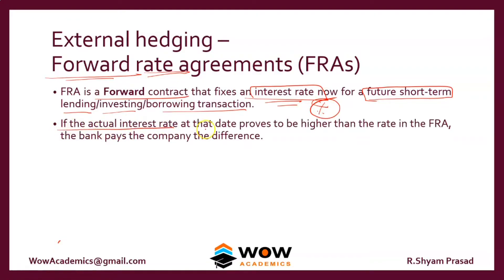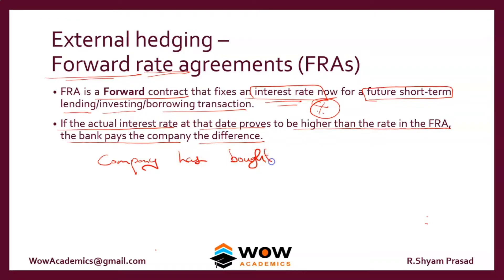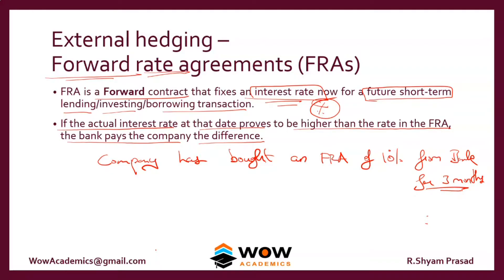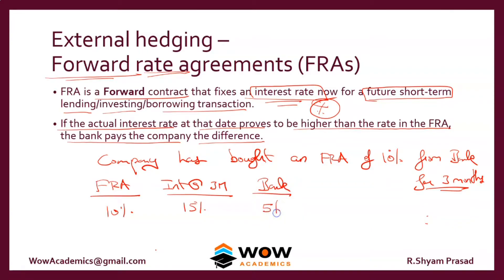If the actual interest rate at the settlement date proves to be higher than the rate in the FRA, the bank pays the company that difference. For example, a company has bought an FRA at 10% interest from a bank for a three-month duration. If the actual interest rate at three months time comes to 15%, the bank has to pay the 5% difference to the company. The effective interest for the company would therefore be 10%.